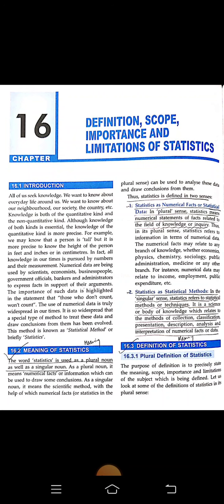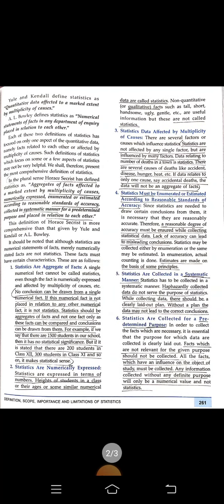Numerical means in terms of numbers only — for example, the height of students in a class, the age of students, or scores in math and science. These are numerical data. It is not qualitative — we are not counting characteristics like 'gentle,' 'handsome,' 'beautiful,' or 'kind-hearted.' We are recording only numbers.